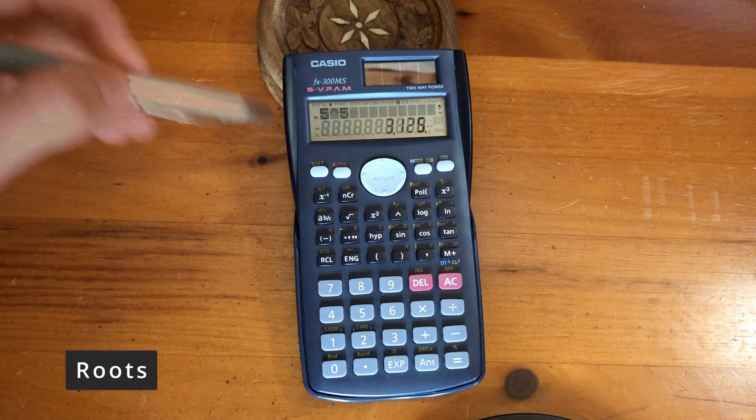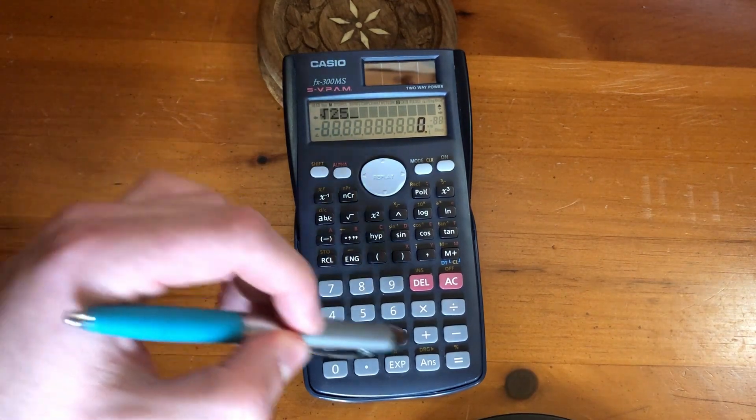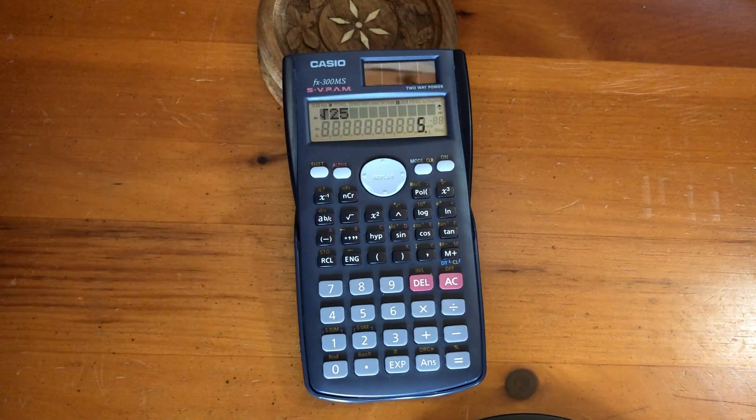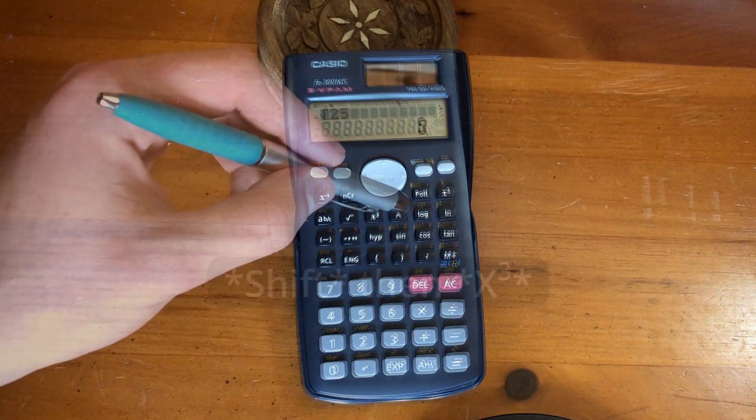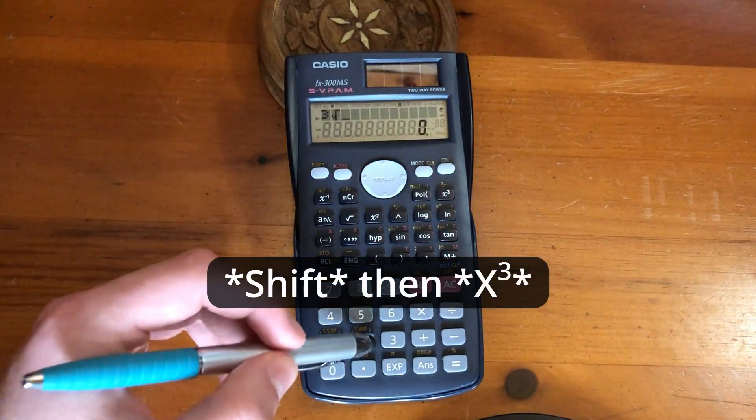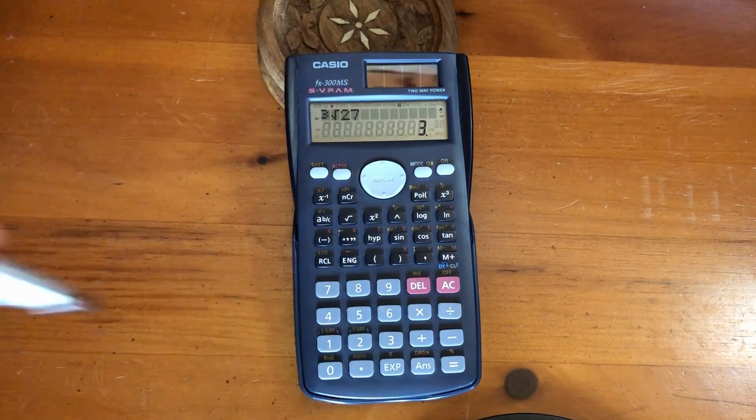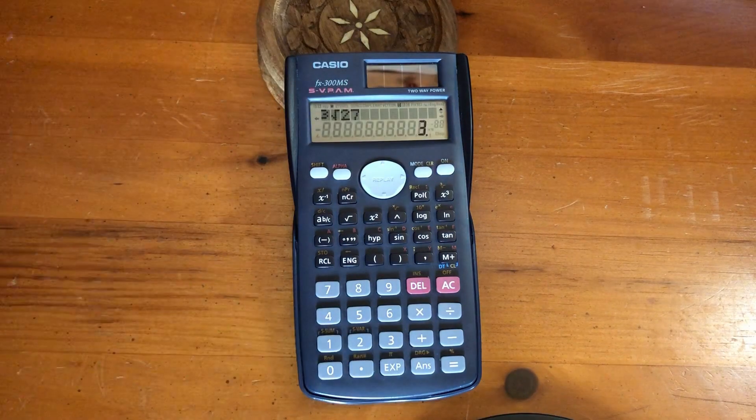The square root of 25 equals 5. Next, the cube root of 27 equals 3. To find a root other than square or cube,